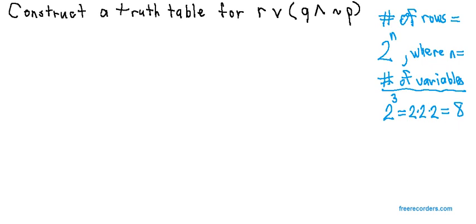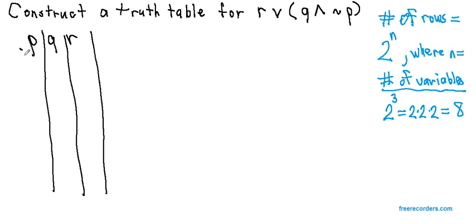Now the key is to make life easy on you, to be able to check your homework answers easily. You want to list the eight rows in the same order that our textbook does. Here's an easy way to remember how to get the eight rows in the correct order. We're going to list the variables alphabetically, P, then Q, then R.